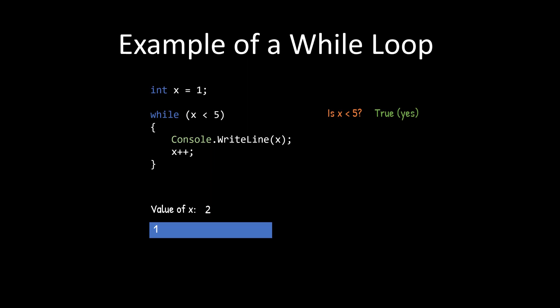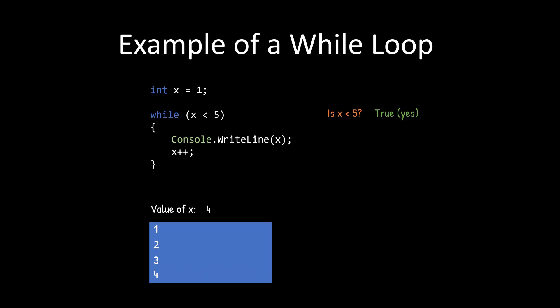Is two less than five? Yes. So it's going to drop back into the loop. And again, it's going to print and we're going to output it and we're going to add one again. So now x is three and it's going to check again. Is three less than five? Yes. So it's going to print it again, increment it again, check it again. Four is still less than five. We're still printing.